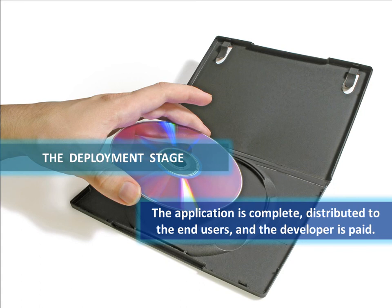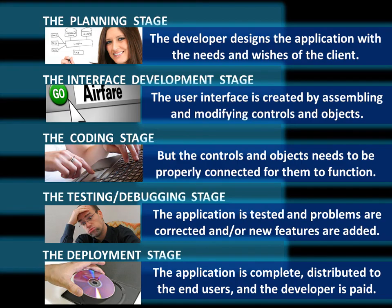Finally, when the application is all done and it seems like everything works, there's a deployment stage. We're putting our application on a user's machine and letting them use it and work with it, hopefully meeting their needs — and of course, we as the developers are getting paid for our hard work. So again, the five stages: planning, interface development, coding, testing and debugging, and deployment. The planning stage is extremely important. The more time you spend planning, the less time you'll probably have to deal with interface development, the coding stage, and testing and debugging. So don't bypass that planning stage.